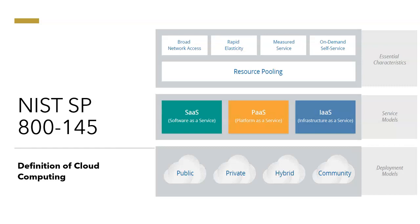The next service model is PaaS — Platform as a Service. In this model, the CSP provides the operating system, development environment, or application platforms such as a database, Python platform, PHP platform, or other code platforms. They can also provide file storage services, collaboration tools, or proprietary application processing facilities. The key differentiator is that with PaaS you do not manage the underlying servers, network, operating system, or other infrastructure.